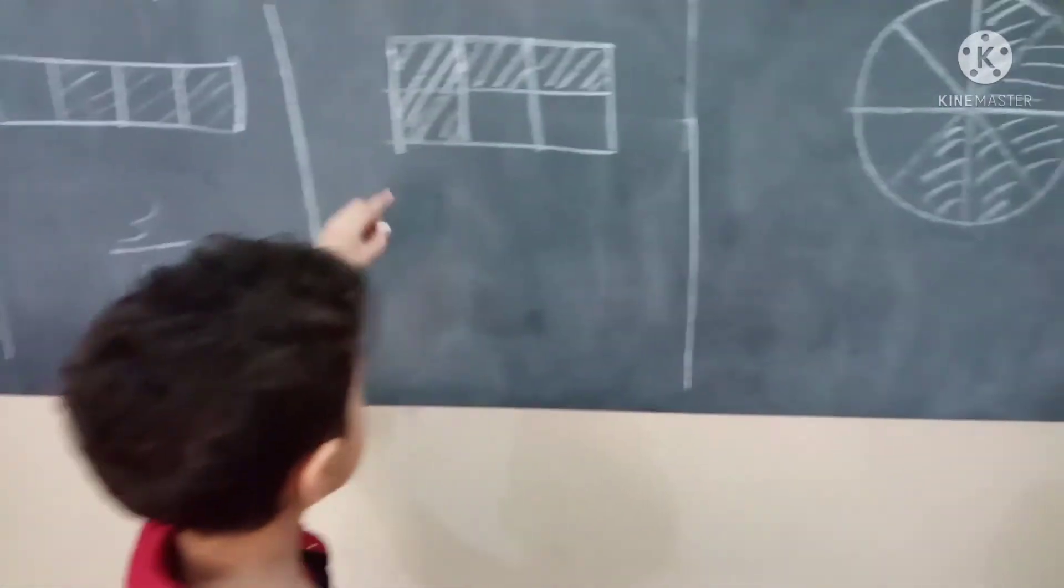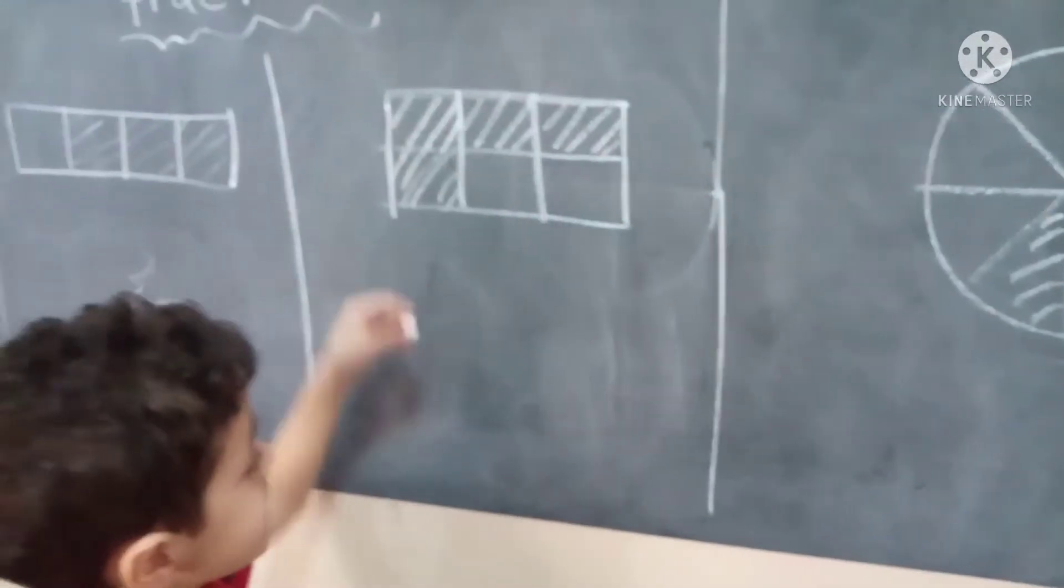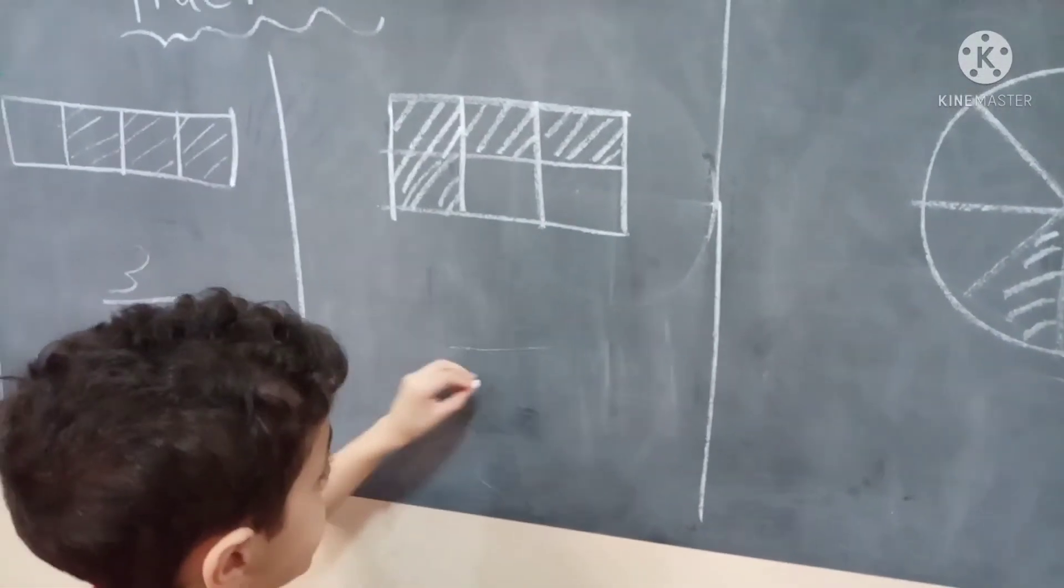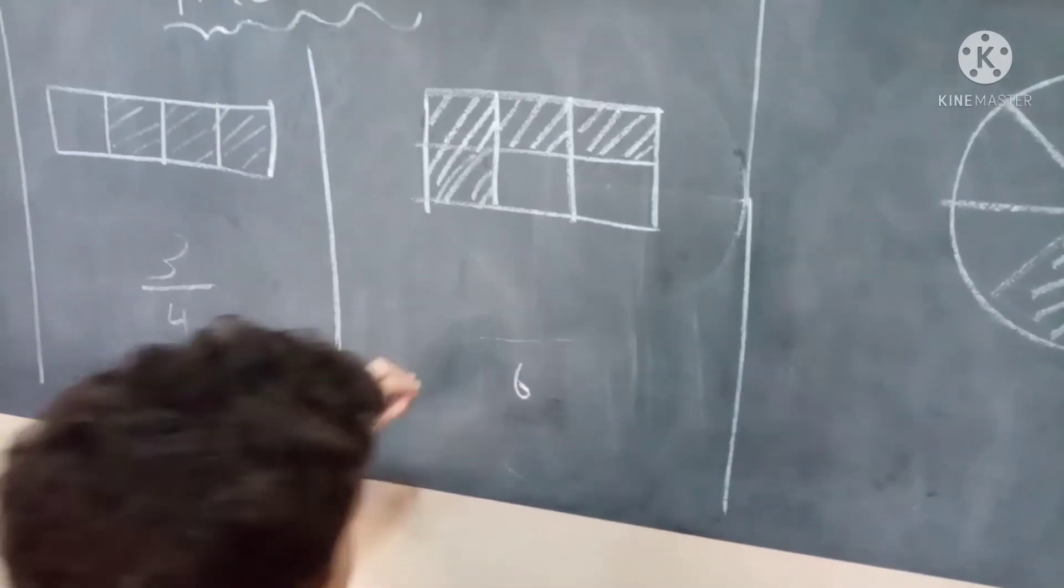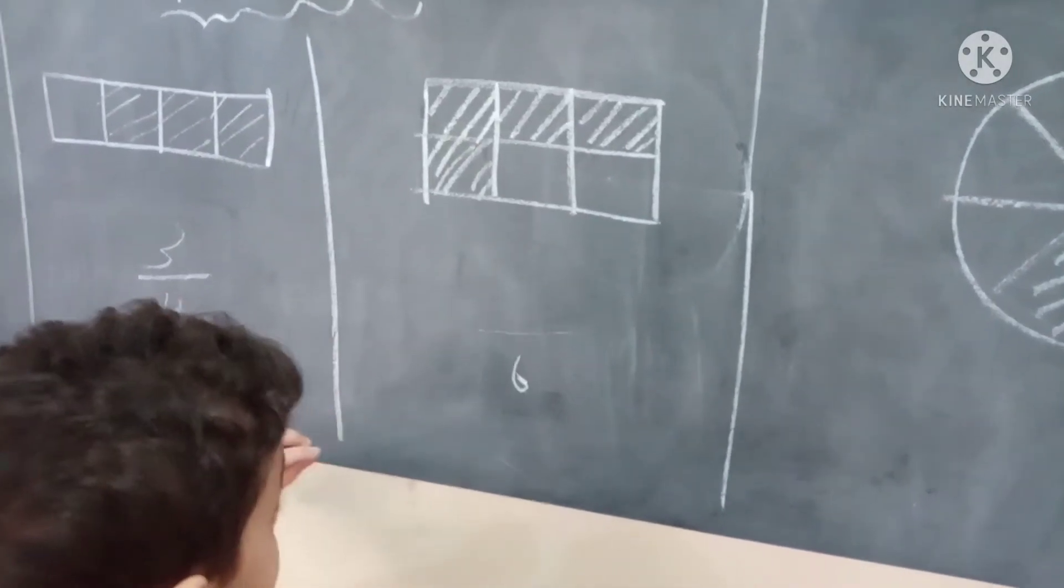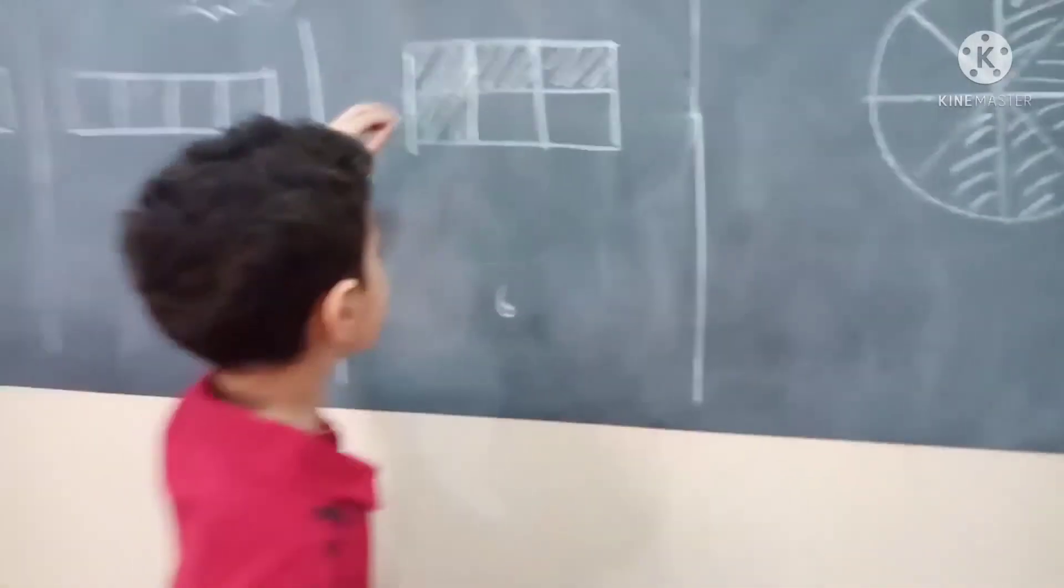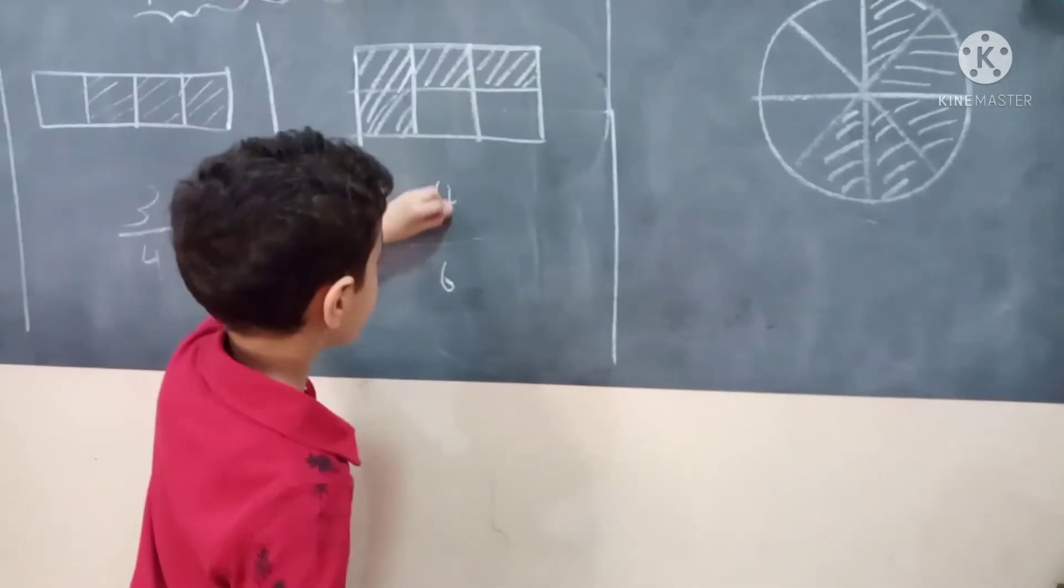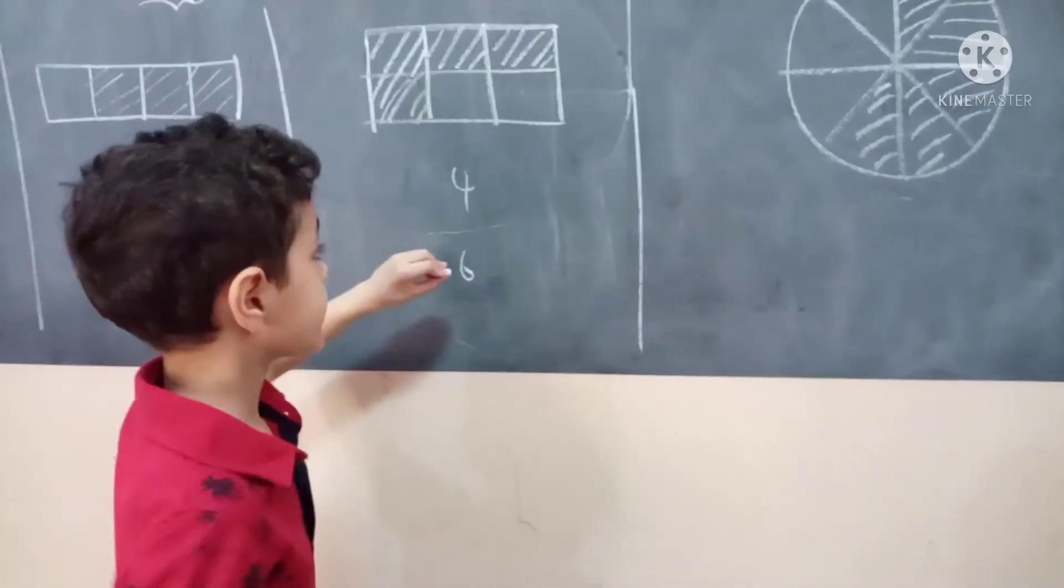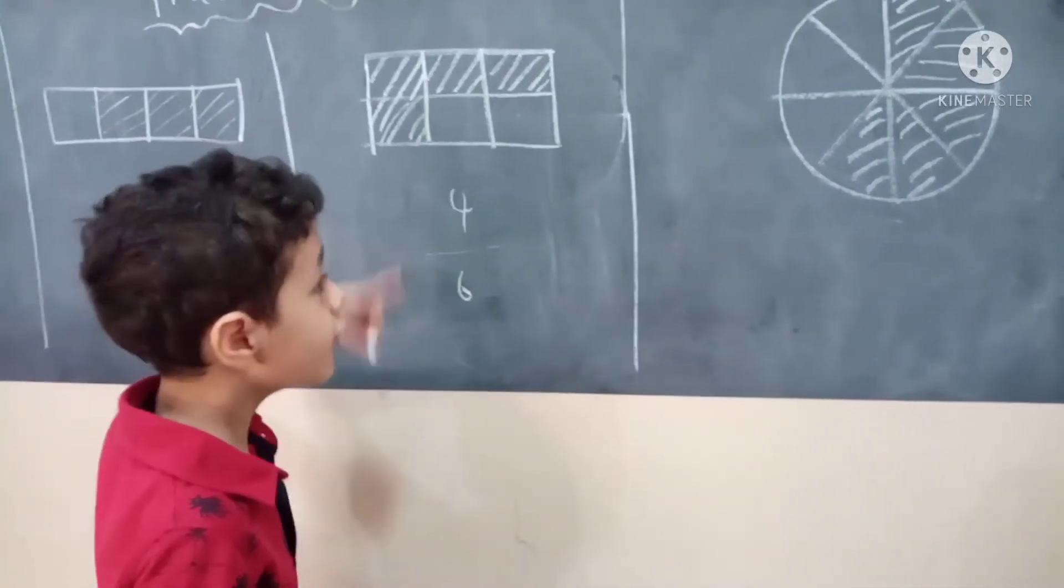And this one is all six. The line. And the sixth is denominator. But in the colored are one, two, three, four. So this is four. And the fourth is denominator. So this is four over six.